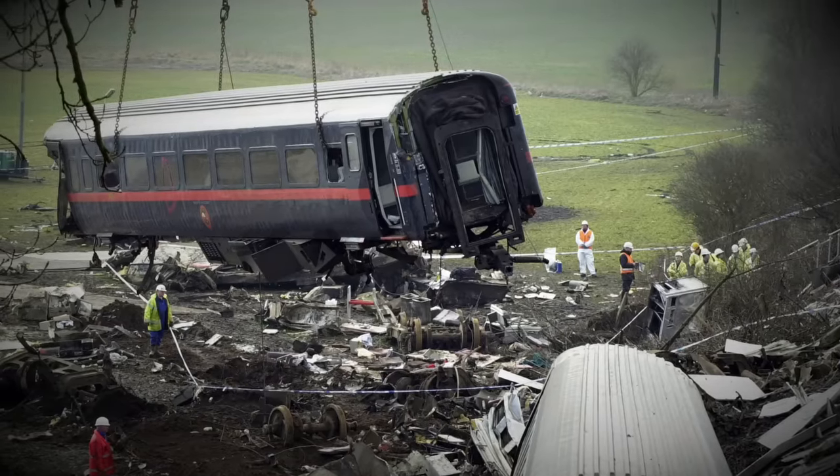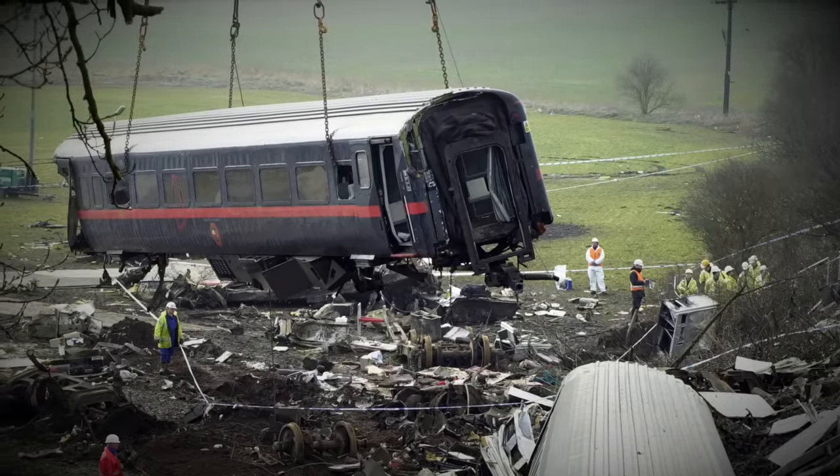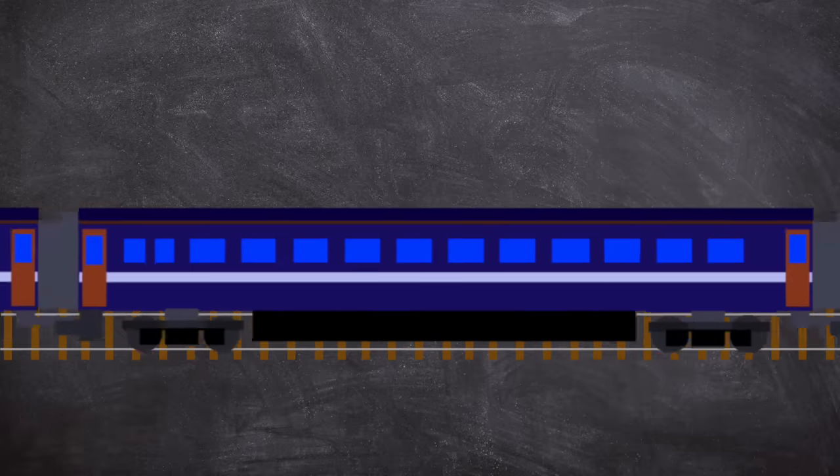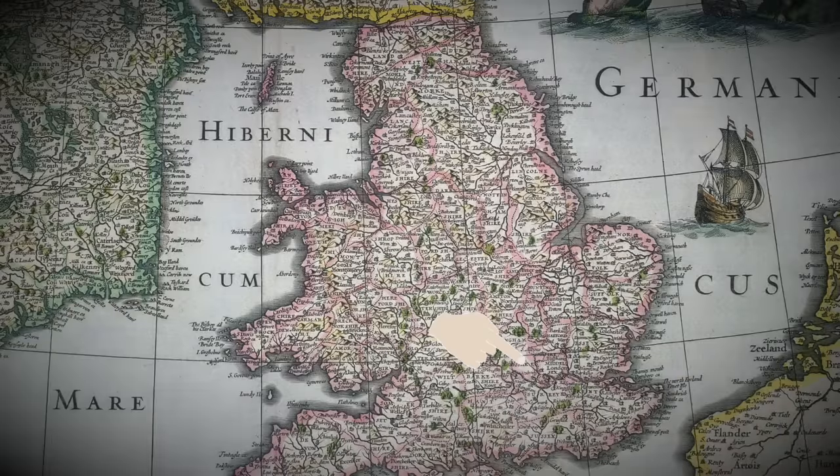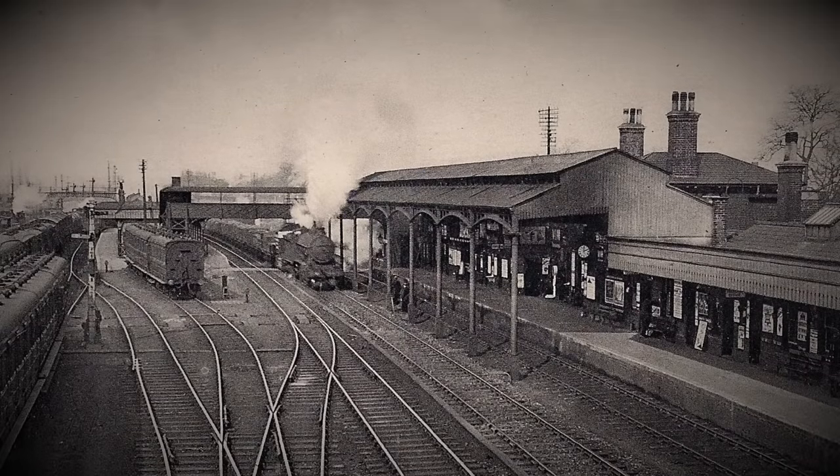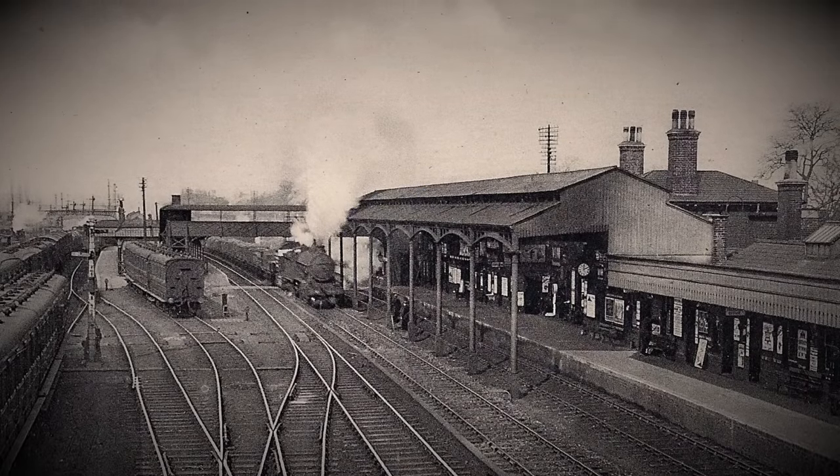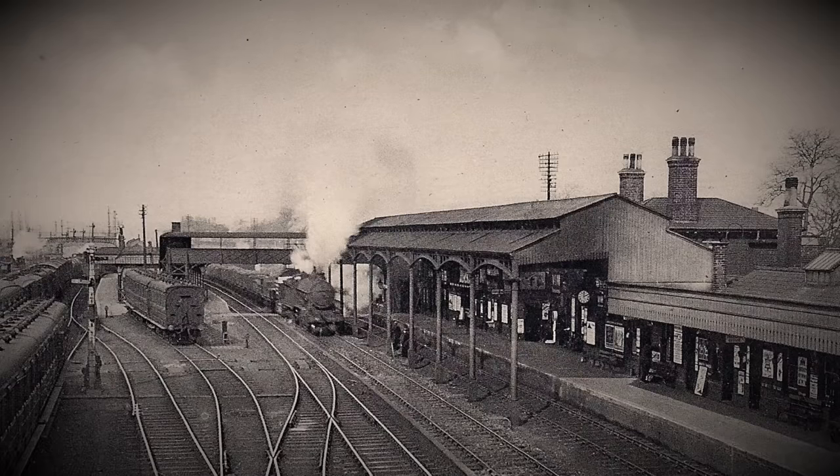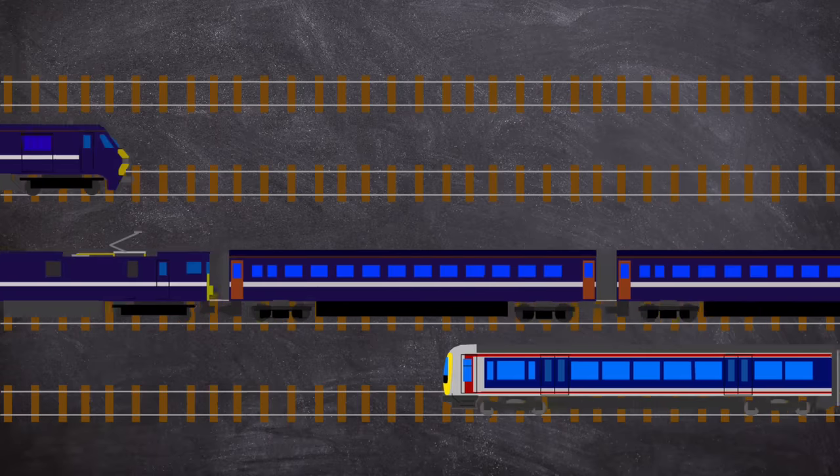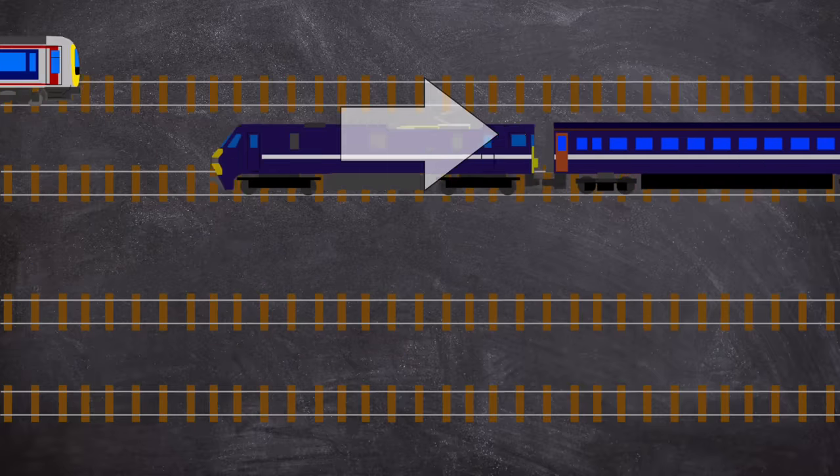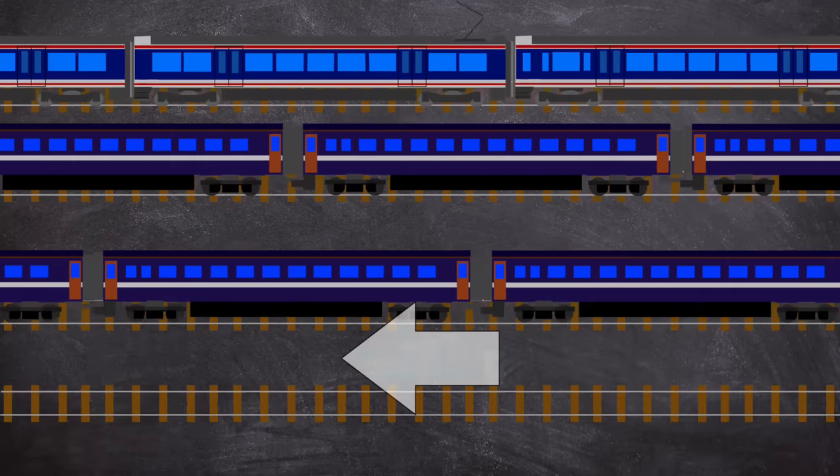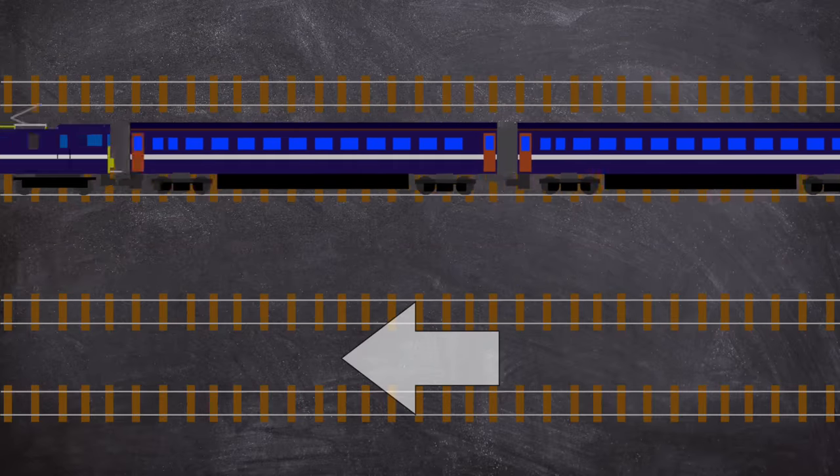I should say that the east coast main line has had its fair share of crashes. Further down the line is the infamous Morpeth curve which will also likely be a future video. Anyways today we are hovering around Hatfield in Hertfordshire. There has been a station here since the 1850s. It sees both stopping commuter services as well as fast non-stop intercity trains whizzing through. The route is arranged with fast and slow lines running alongside one another.